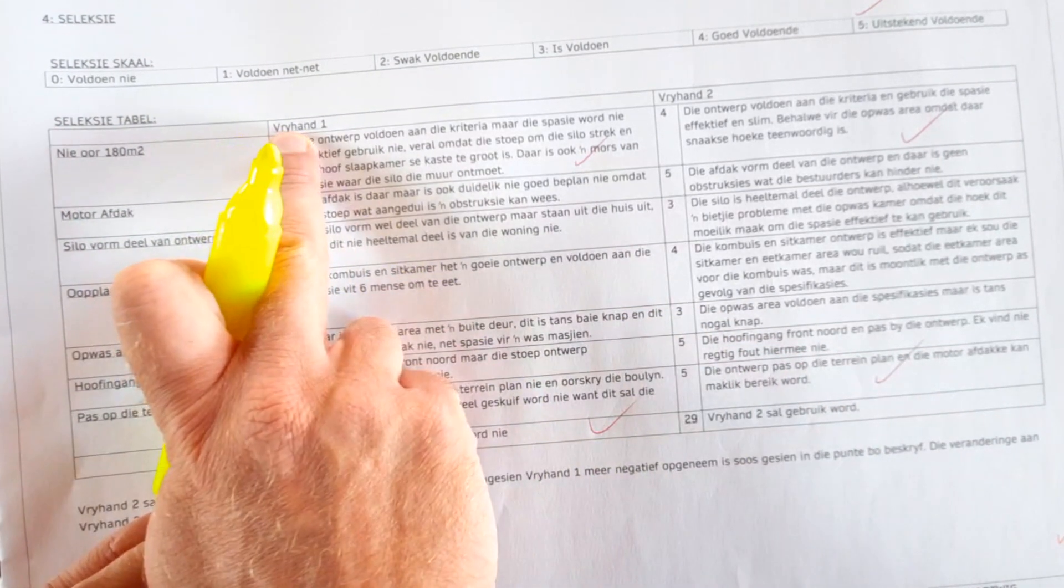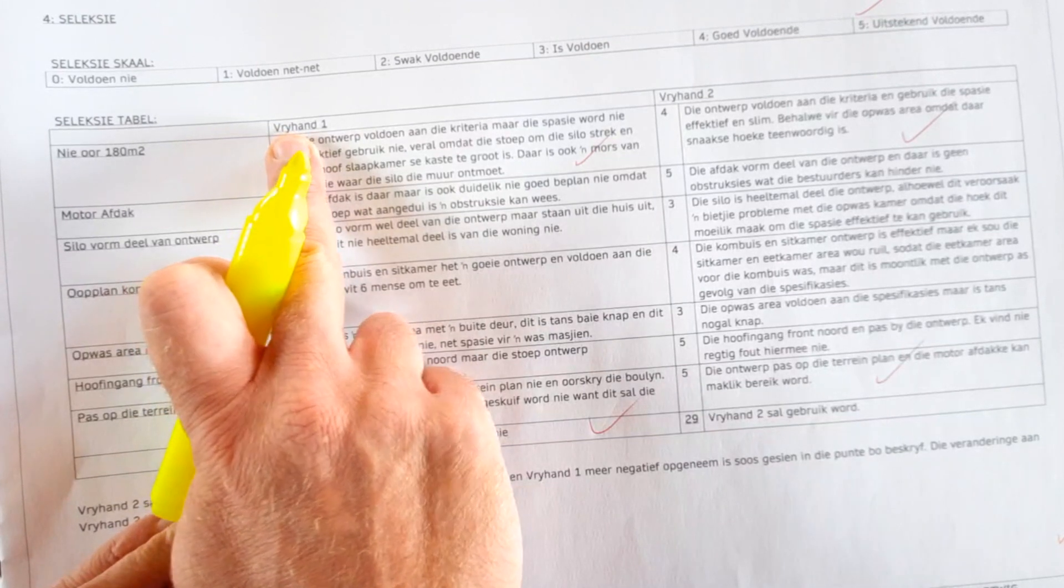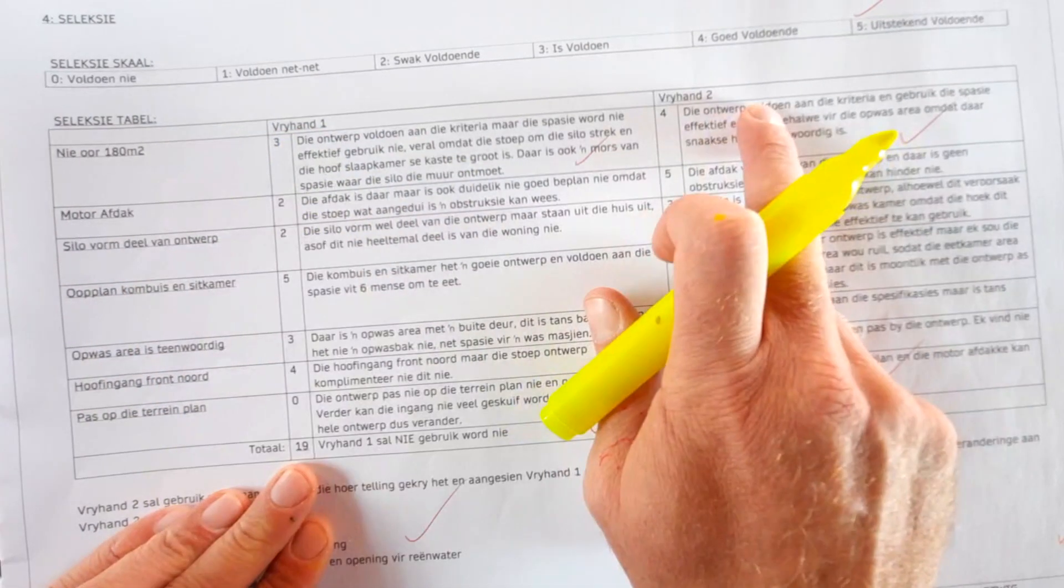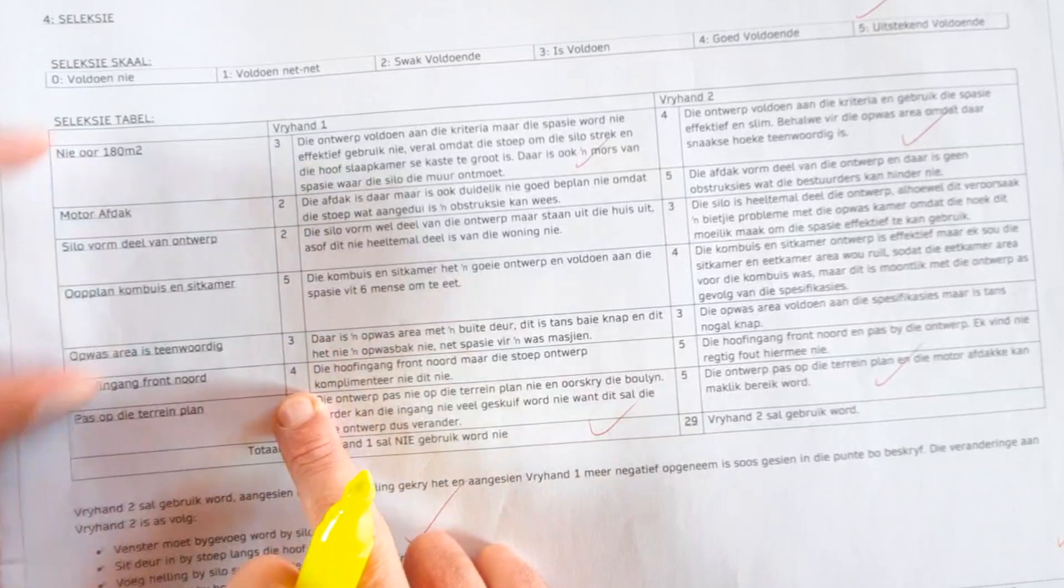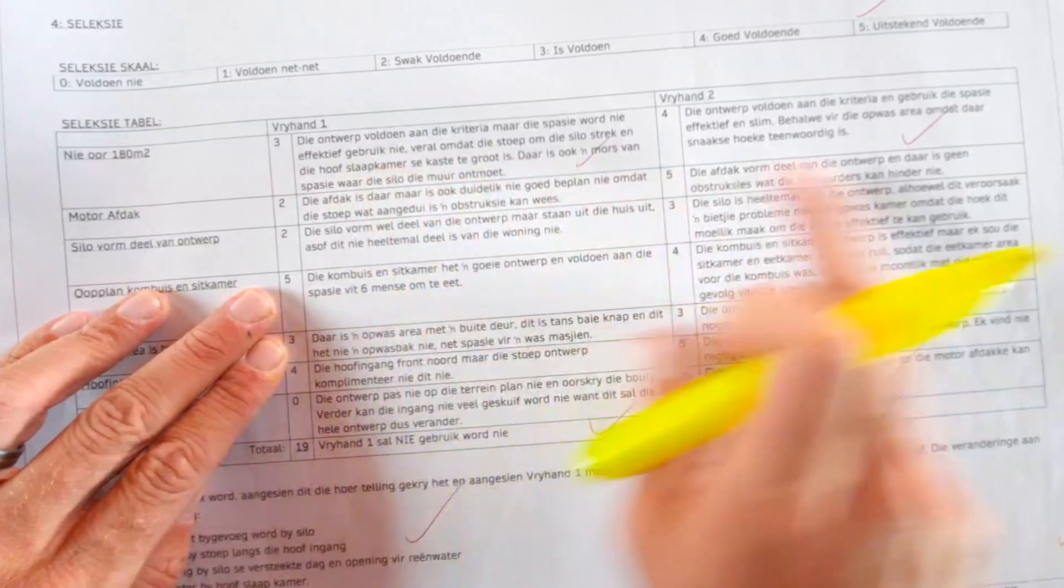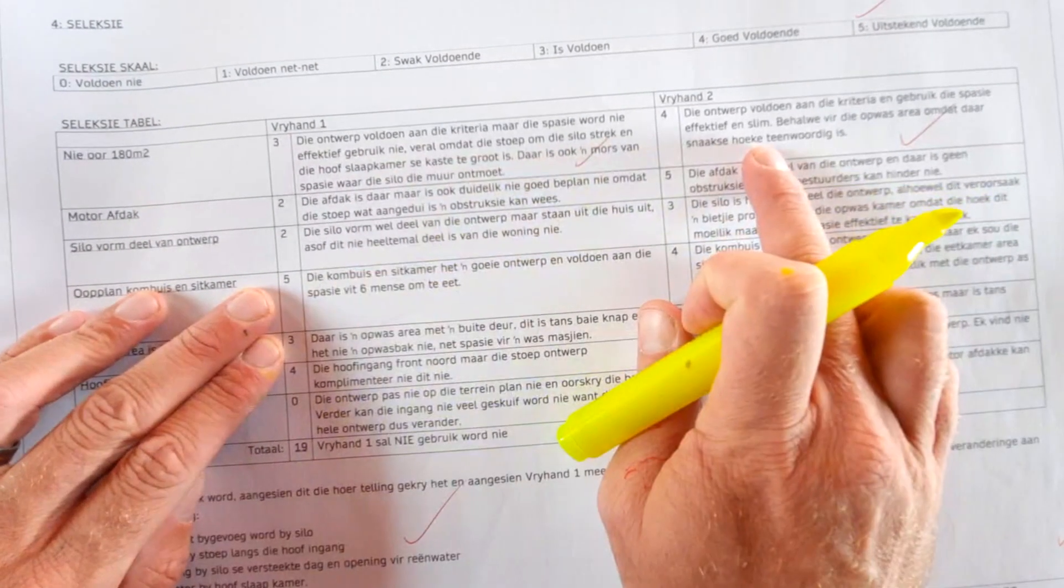And then you have your title of the actual concept, concept one, concept two, the rating that got, and a description on either side of how it was obtained.